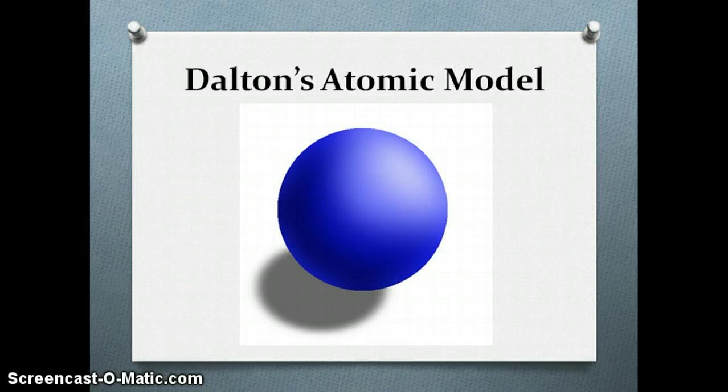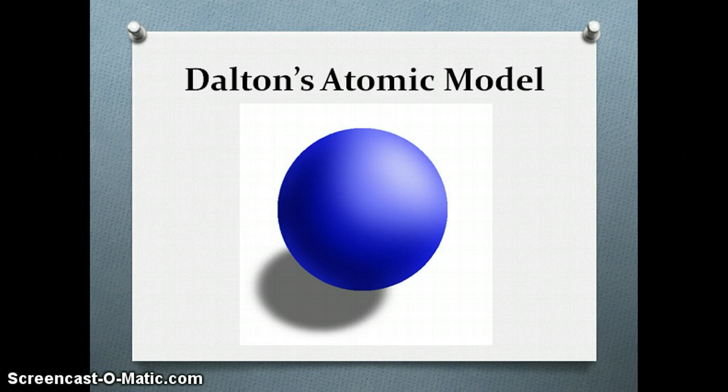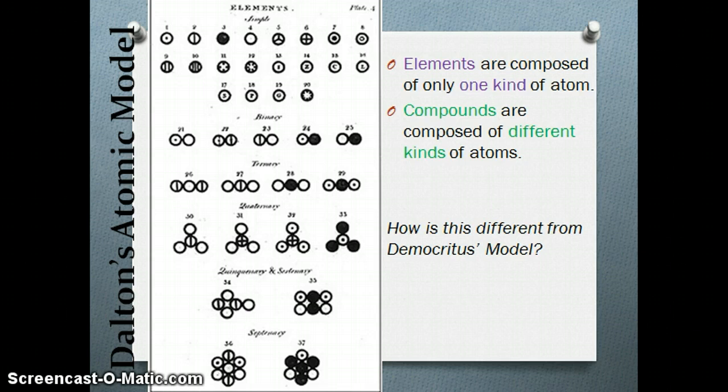Following the six main points, we can determine a model for Dalton's atomic theory: a sphere. This sphere will be indivisible. For example, if we're talking about carbon, that carbon atom will share the same characteristics with other carbon atoms but will differ from other elements. So Dalton's model is basically a sphere that cannot be subdivided into smaller particles. Thanks to John Dalton's work, we know that elements are composed of only one kind of atom and compounds are composed of different kinds of atoms.